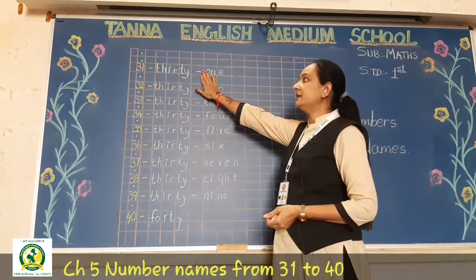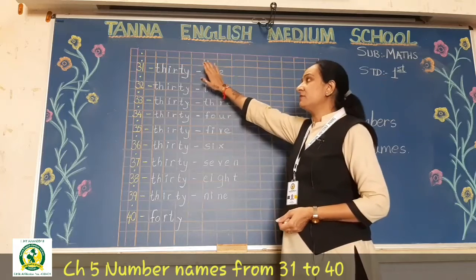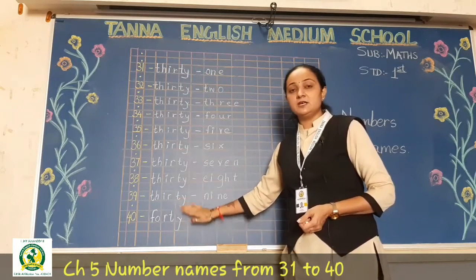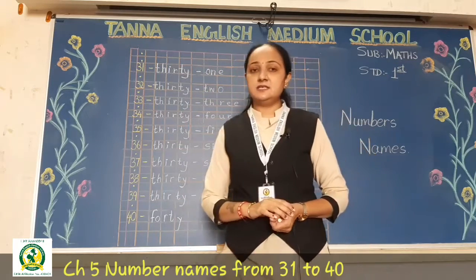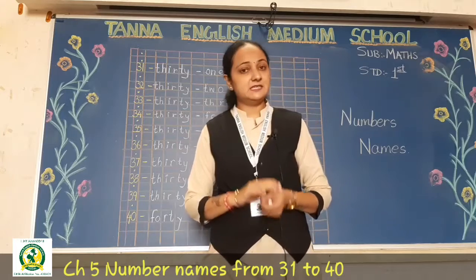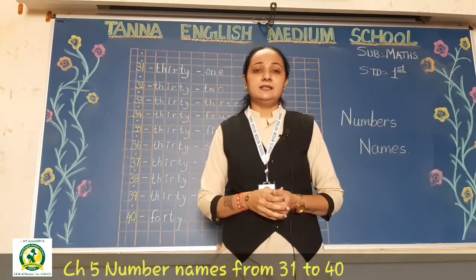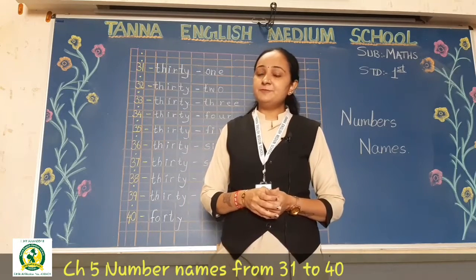So here we have completed our number names from 31 to 40. You have to write this in your CW math book, and then revise in your rough book.